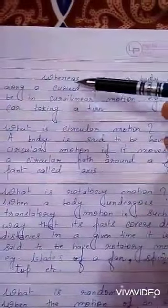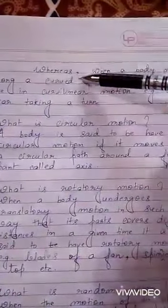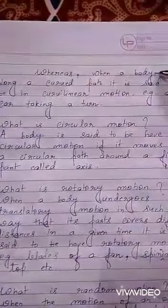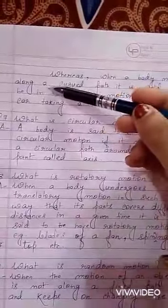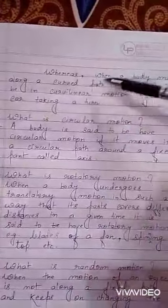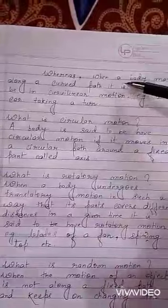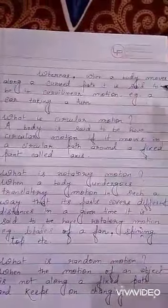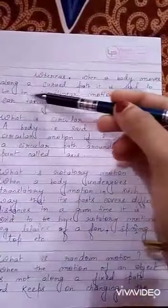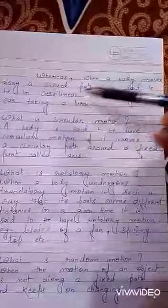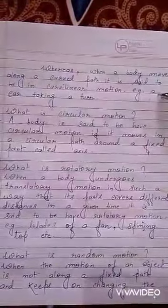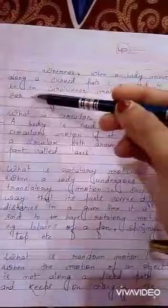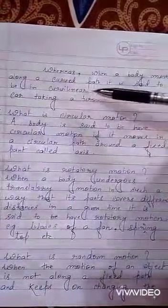Whereas, when a body moves along a curved path, it is said to be in curvilinear motion. For example, a car taking a turn.